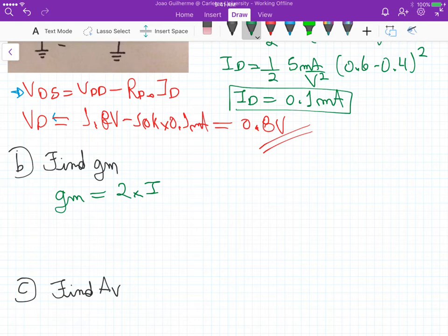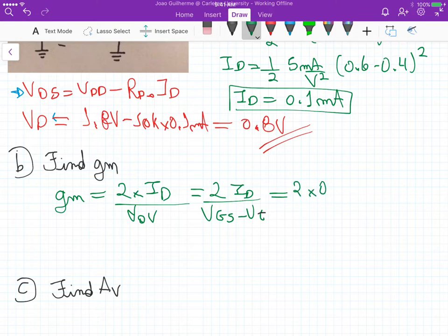So it's 2 times ID divided by the overdrive voltage. This equals 2 times ID divided by VGS minus VT, which in our case equals 2 times 0.1 milliamps divided by 0.6 minus 0.4, and that's 0.01 ampere per volt.